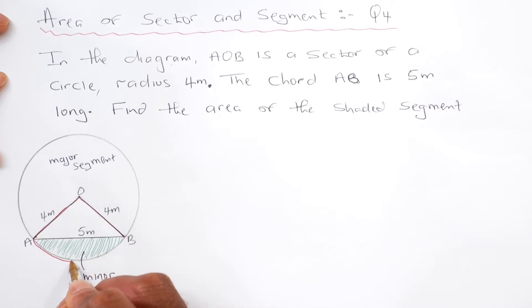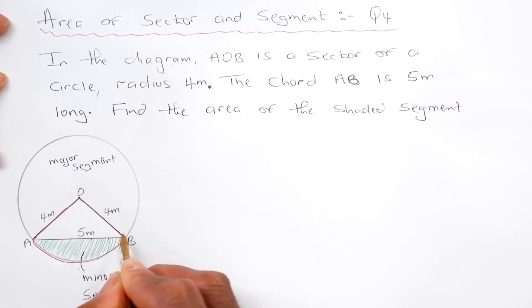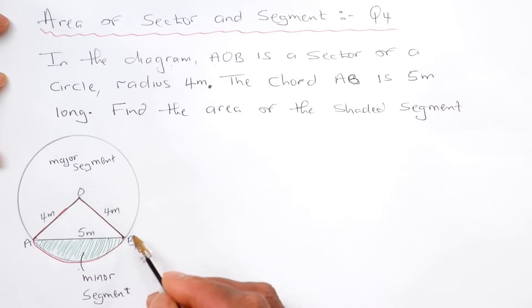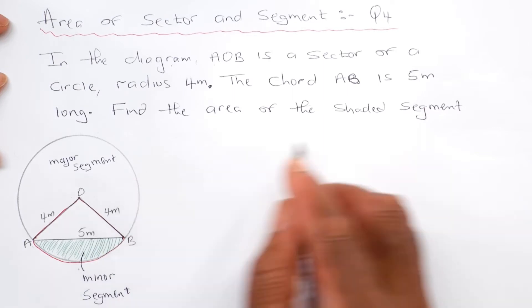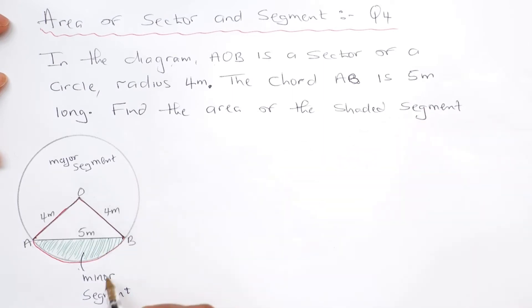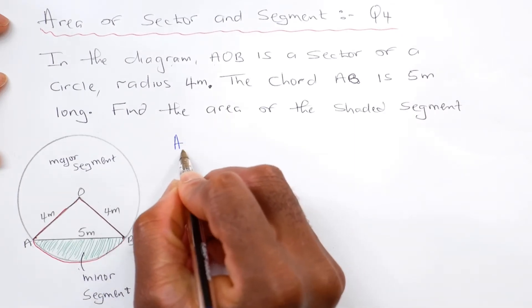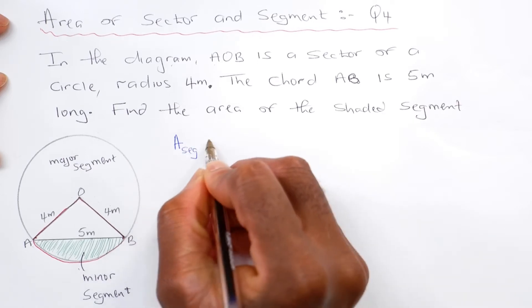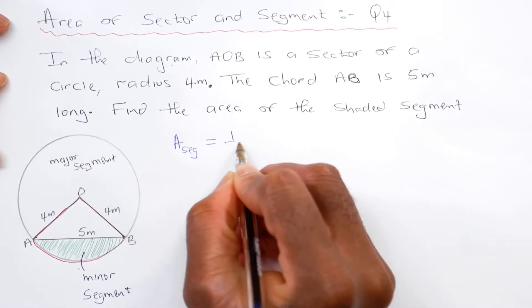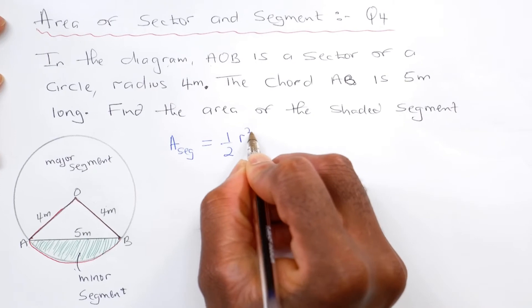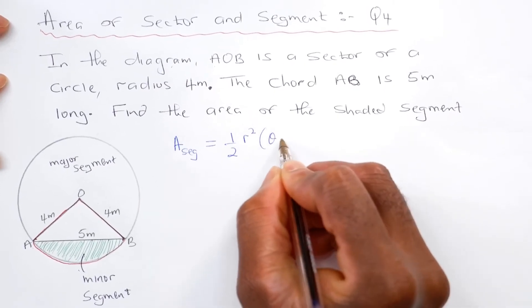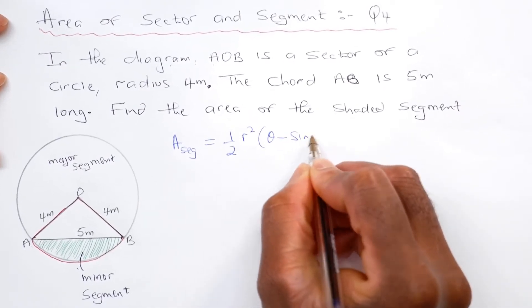The sector is basically the red part here. So that's the sector, and the green part here is the segment. To find the area of this shaded segment, we say that area of this segment equals a half r squared theta minus sine theta.